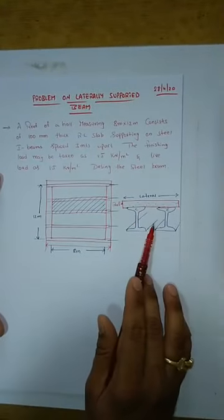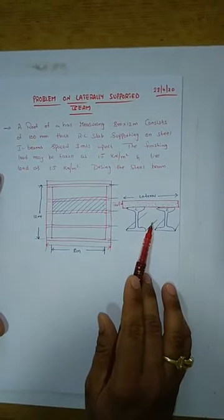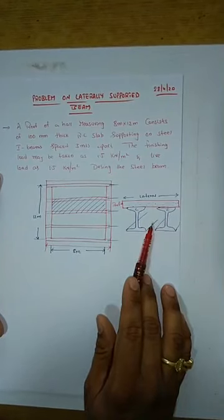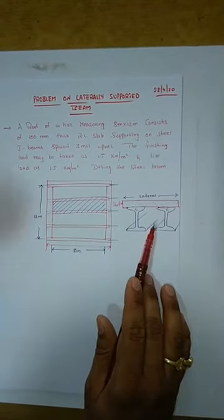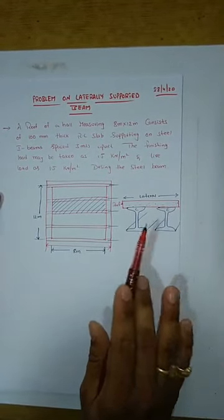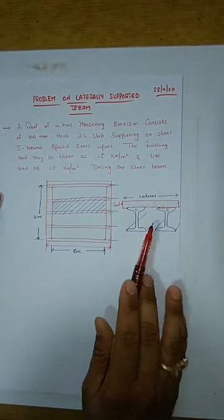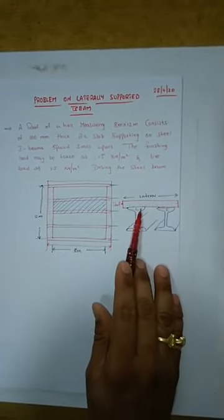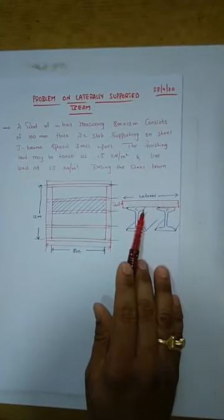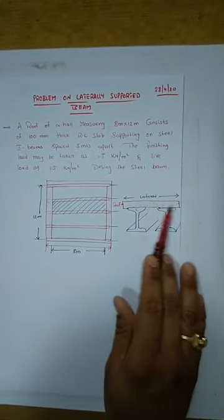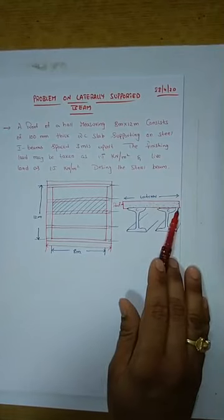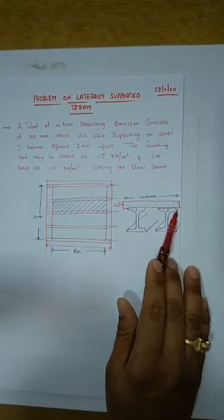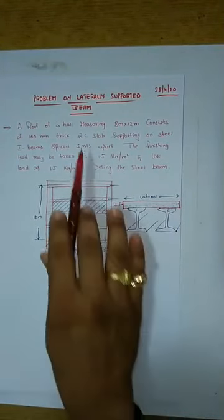When there is no roof on the top of the compression flange, those beams come under the laterally unsupported beam category — we will do that problem in the next class. Today we are solving a problem on laterally supported beam because the top compression flange is supported laterally with the help of roof action.